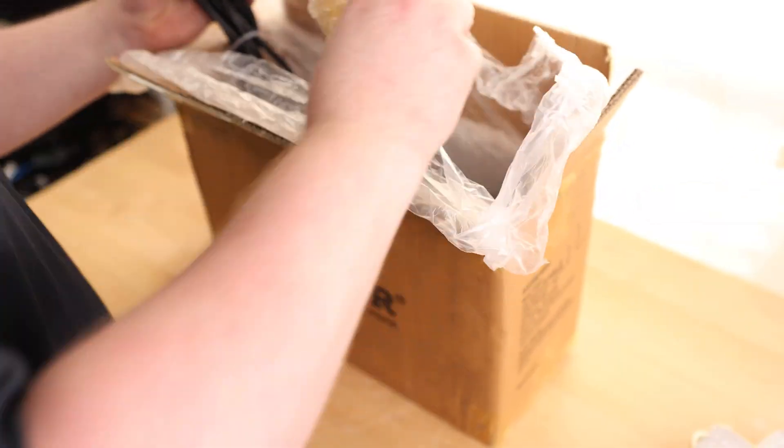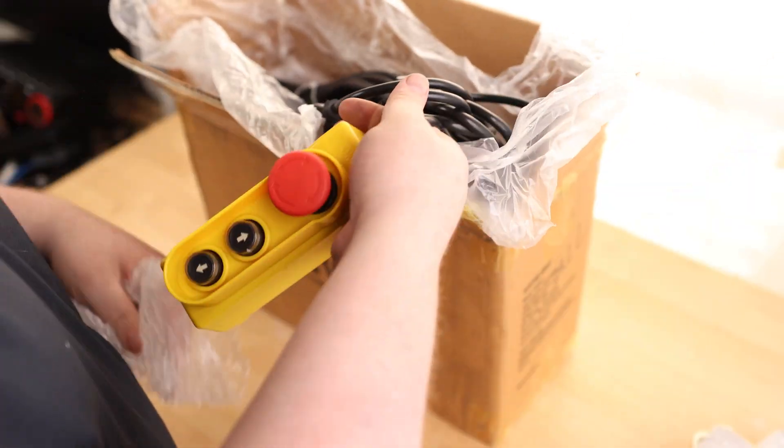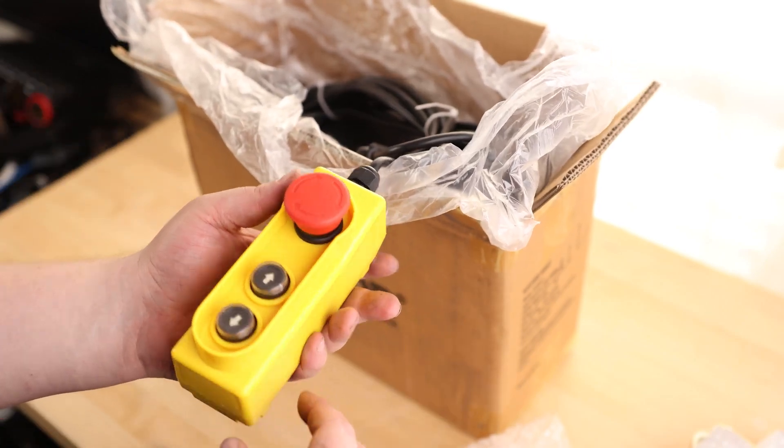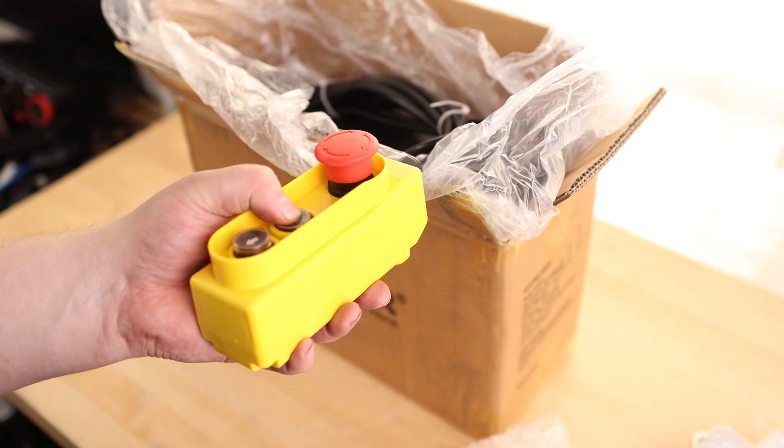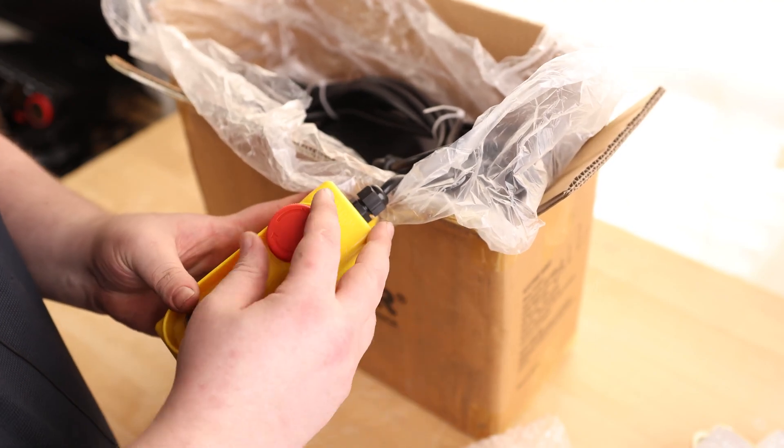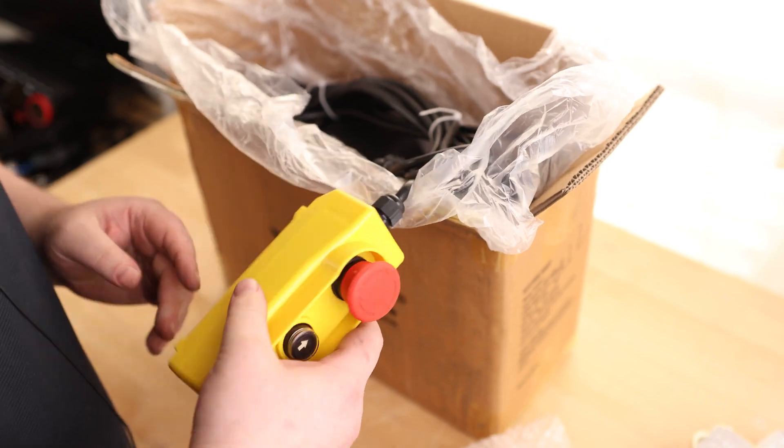You got a nice long cord here. This is for our controller. That's interesting. They actually put a mounting hole in the back, so if you wanted to, you could screw this thing to a wall. I always prefer having these things going with the hoist. That is a nice thick button right there, and we have an emergency button. That's a great little controller.